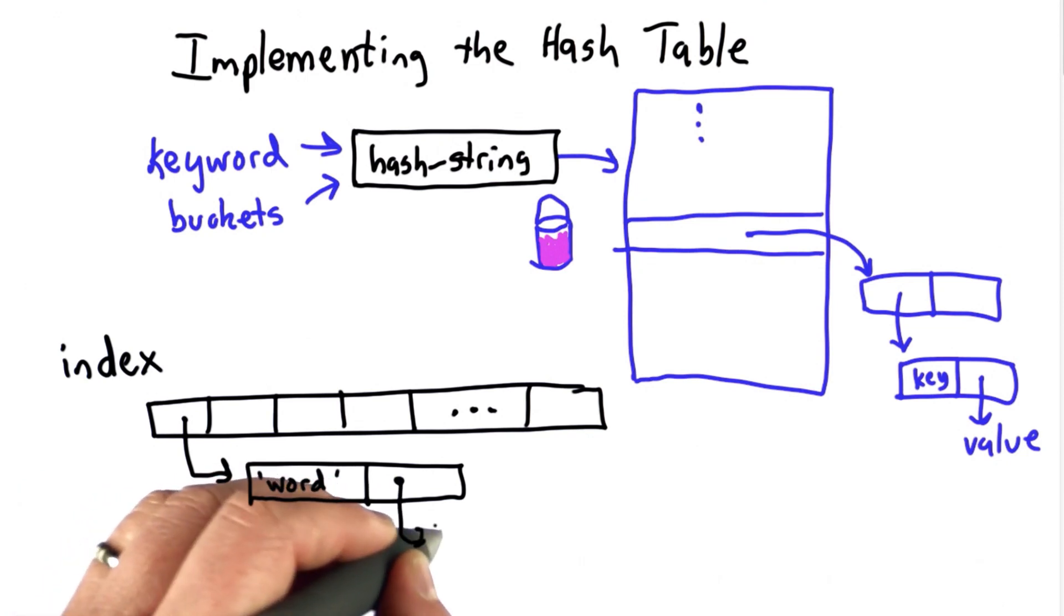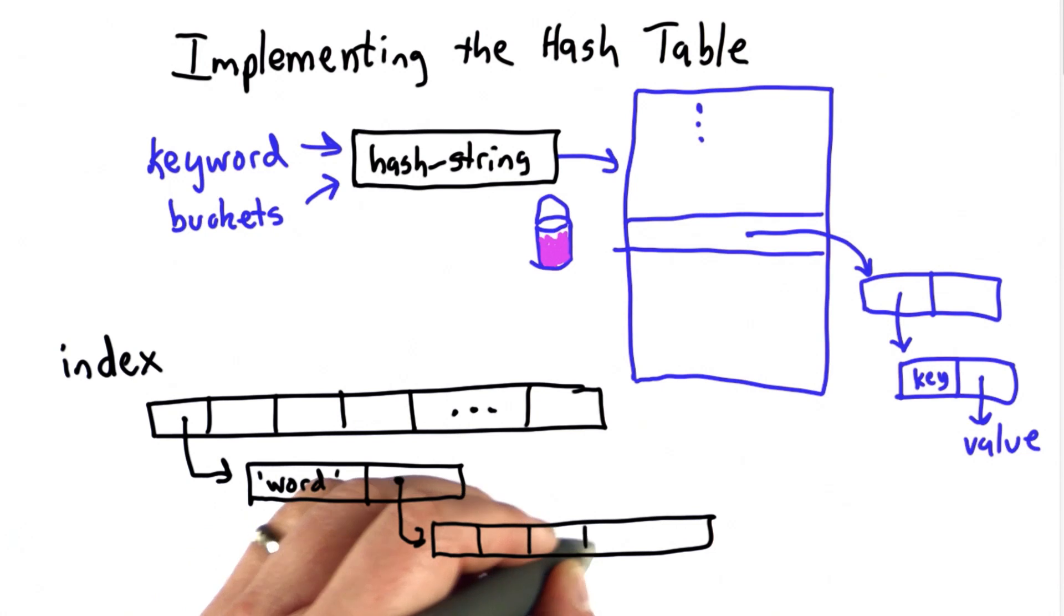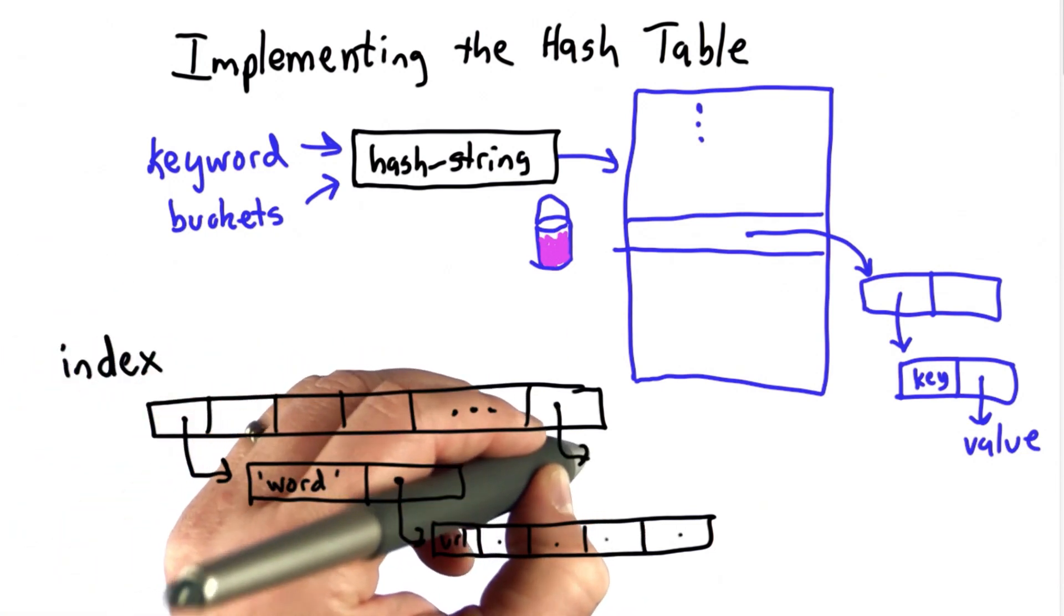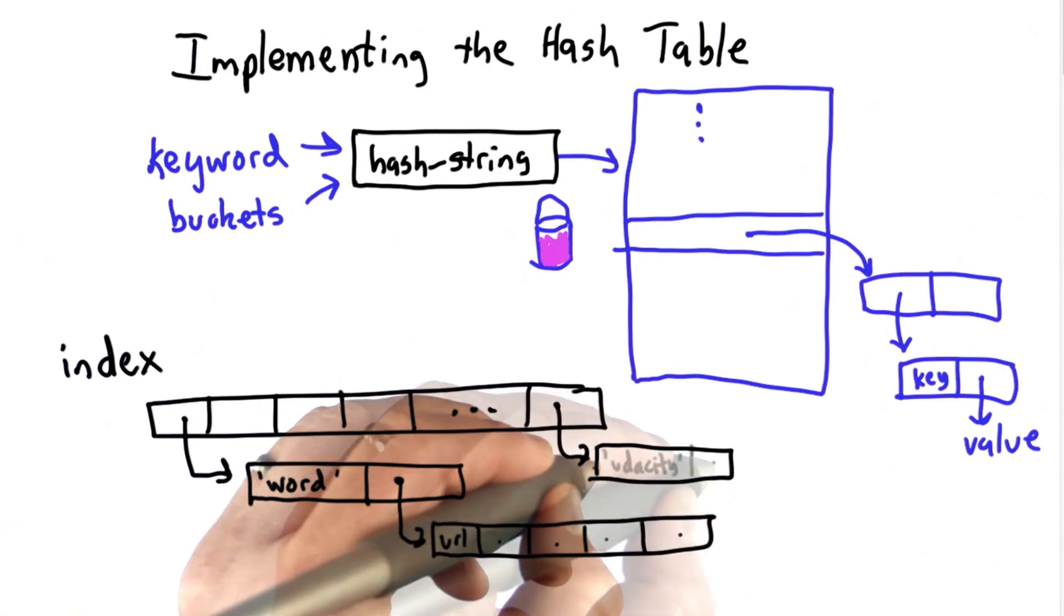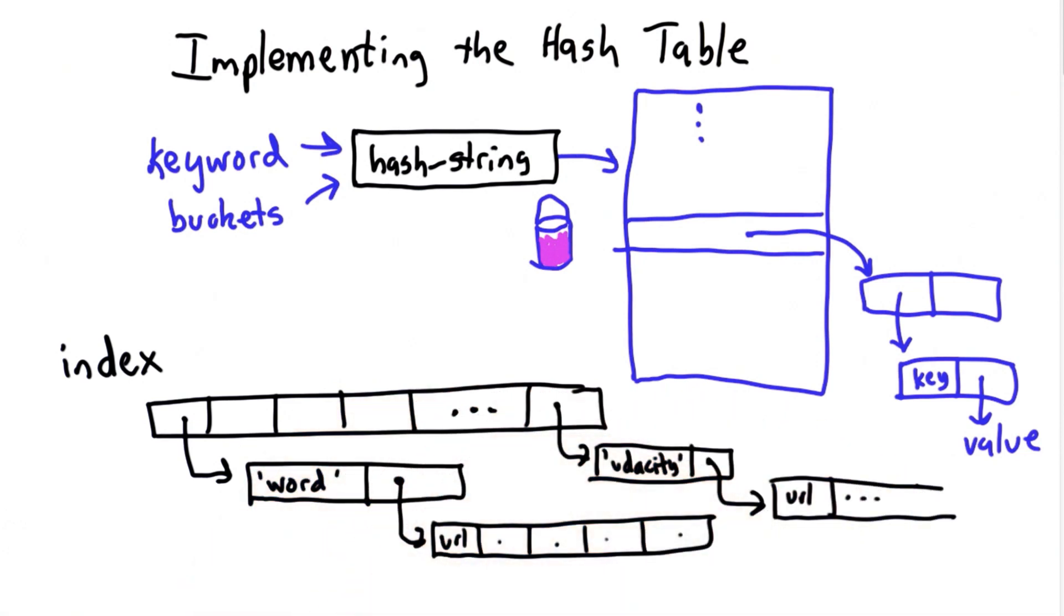And the second element of the pair was a list of the URLs where that word appears. And we would have each word in the index as its own entry with its own list of URLs. So this was the data structure that we used last class.